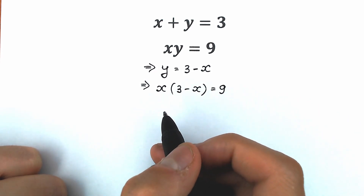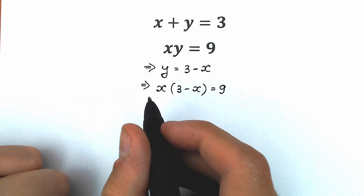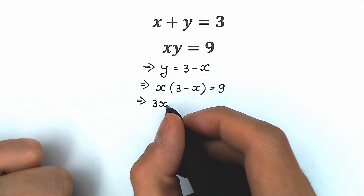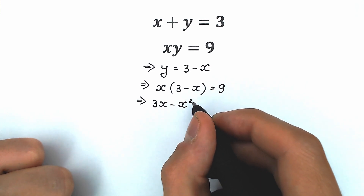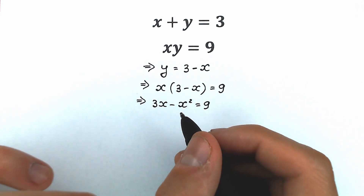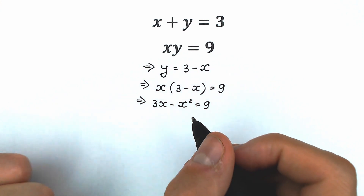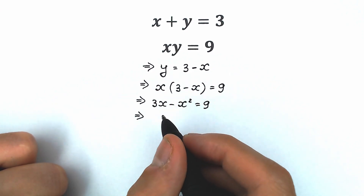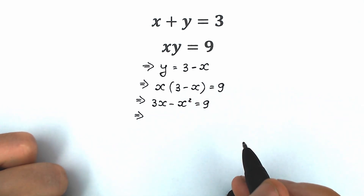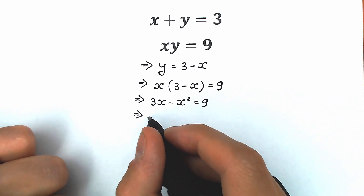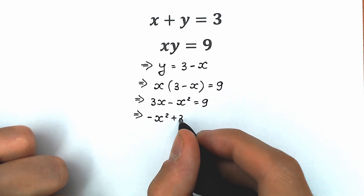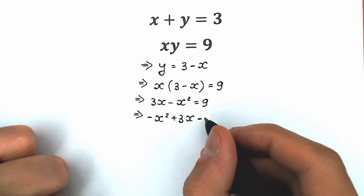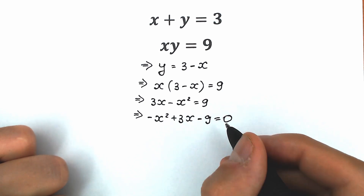Right now let's multiply it out and simplify. Let's multiply our x by the parenthesis. So we have 3x minus x squared equals 9. It looks like a quadratic equation. Let's simplify it — let's change the order a little bit. We'll write minus x squared on the first position, since we prefer second power, first power, then the constant. So we have minus x squared plus 3x, and let's bring 9 from the right side to the left, remembering to change signs. So we have minus x squared plus 3x minus 9 equals 0.